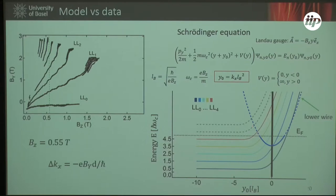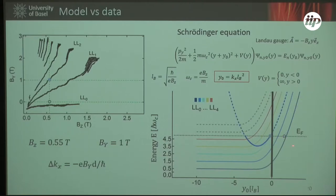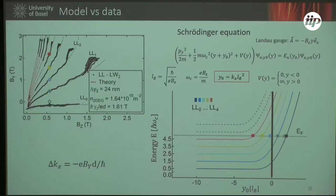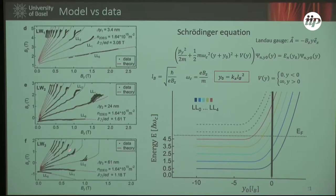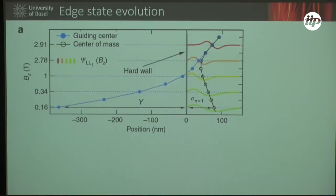Coupling the guiding center position to real space via the magnetic field, we draw the dispersion of the lower wire — a simple parabolic dispersion — and get signals when we match the Fermi point of the lower wire mode with the positions of these Landau levels. Shifting By moves the Fermi point to match each Landau level in turn, giving current peaks. Repeating this for different Bz values allows us to plot tunnelings to the first, second, and third modes in the lower wire, and we get very good agreement between the theoretical positions from this simple single-particle picture and the data.